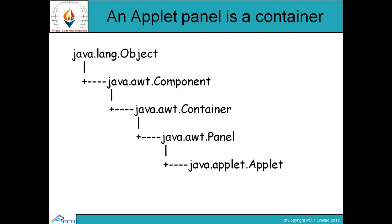The applet panel is a container. This is the applet hierarchy - the AWT hierarchy - showing how we can inherit the container from the applet. The first one is java.lang.Object, which is the base class, the parent class of any class. This class is inherited by the java.awt.Component class, and the Component class is inherited by the Container class, Container is inherited by the Panel class, and Panel is inherited by the Applet class.